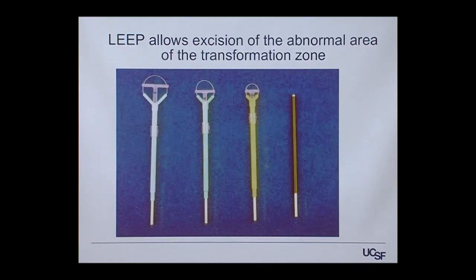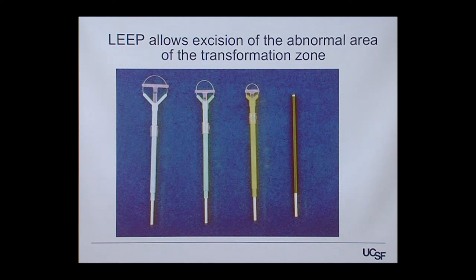A more common technique in the U.S. is the LEEP — loop electrosurgical excision procedure. A wire attached to an electrosurgical generator heats up to cut tissue, scooping a small area off the cervix that includes the abnormal area. These procedures are also done in the office using local anesthetic. They require more equipment and surgical training than cryotherapy and are not done widely in global settings, but are the most common technique in this country.